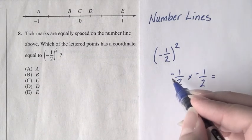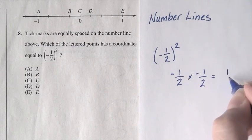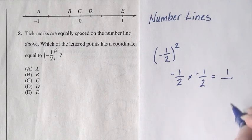When we multiply fractions, we simply multiply across. That's negative 1 times negative 1 on top, 2 times 2 on the bottom is 4.